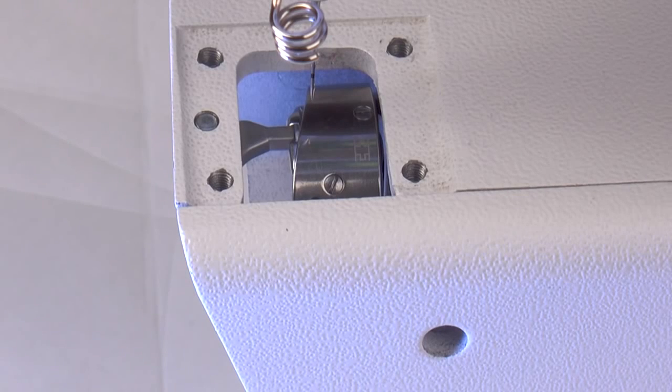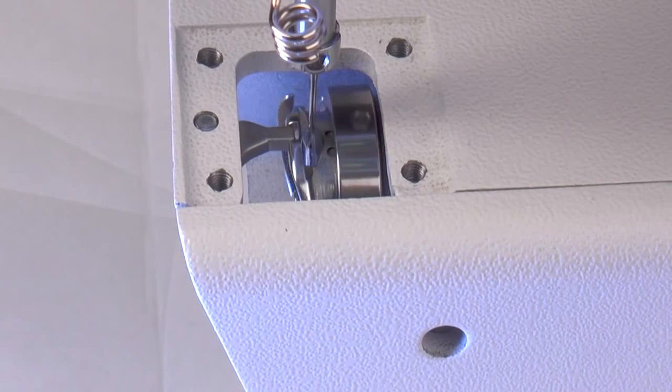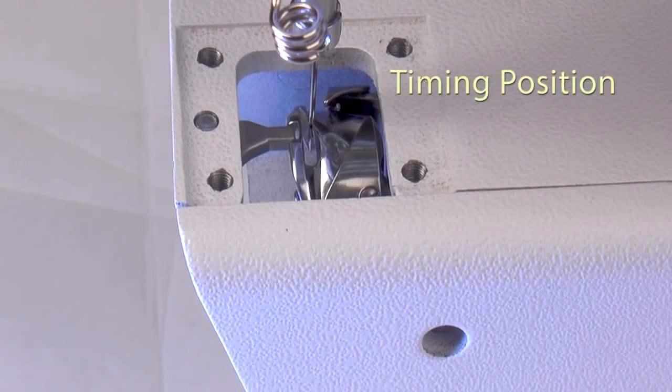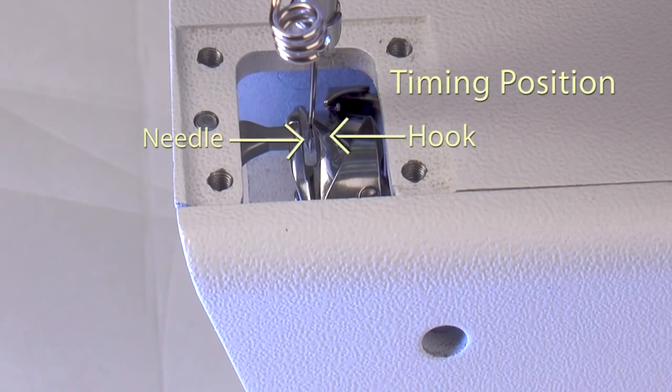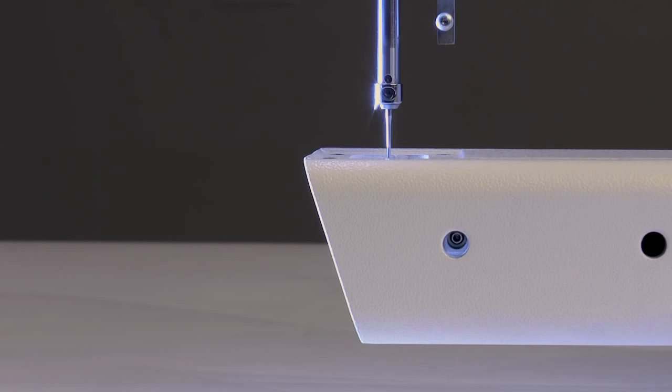If you haven't already done so, move the needle to the timing position now where the hook is centered with the needle as it begins to go back up. With the needle in this position, a set screw should now be visible in this hole. With the needle in the correct position, we will first rotate the hand wheel until a third set screw is visible in the hole.